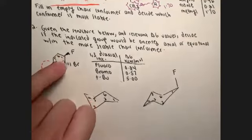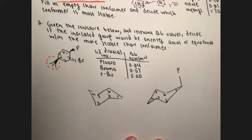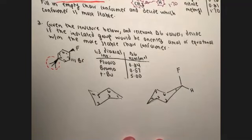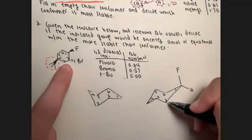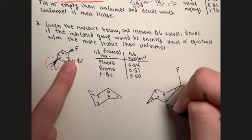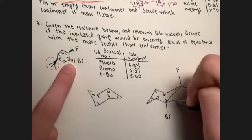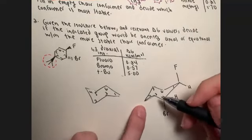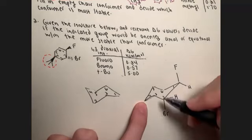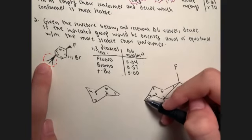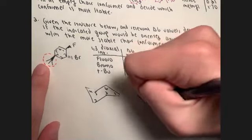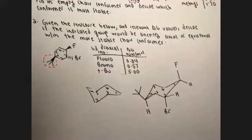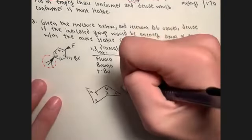The fluoro on carbon one is axial, making the dashed hydrogen equatorial. On carbon two, the trend goes up-down, so the dashed group is axial and the proton equatorial. On carbon four, the trend is up-down-up-down — the wedge tert-butyl group should be equatorial, making the dashed hydrogen axial.